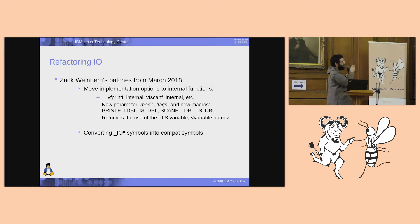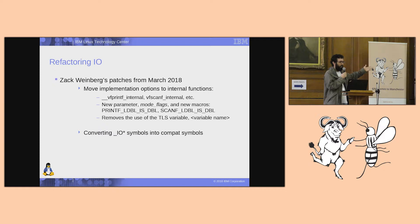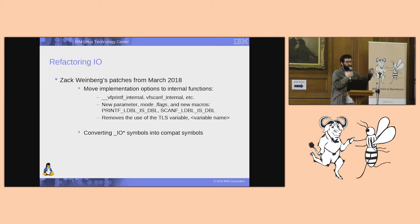The correct solution is what we're trying to work with now. Zach Weinberg posted some patches to the mailing list in March. These are not yet integrated, but they moved the internal details of what the long double format is to internal functions. So you have vfprintf_internal, for instance. These new internal functions have a modeflag parameter that tells the function which format the long double type should be treated as.